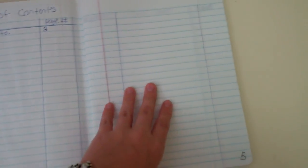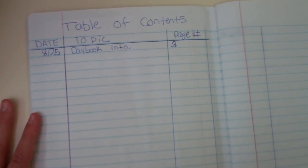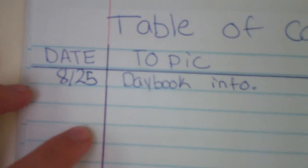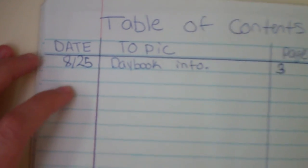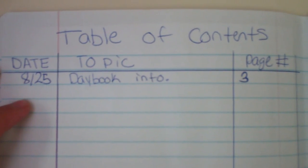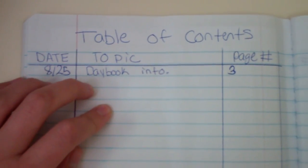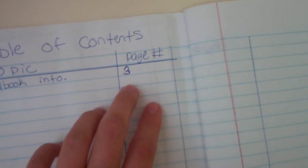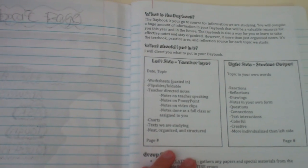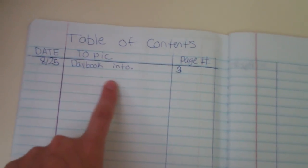So page four, five, six, and seven are going to be for your table of contents. Now we're going to add to this throughout the year, which is why we have to leave so much space. Your very first entry that you can put into it, whatever date that you do it, I did it yesterday which was the 25th. So you can do this whatever date you create your daybook. And I have 8/25 daybook info on page three. You don't need to do a table of contents entry for your cover page or your rubric page. I mostly am just doing this one as a sample.